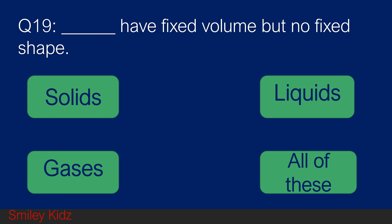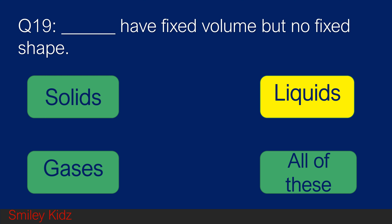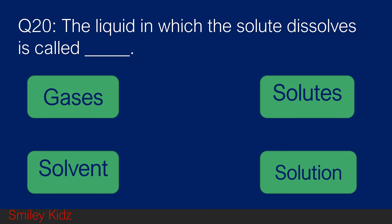Question number 19. Blank have fixed volume but no fixed shape. Option A solids, option B liquids, option C gases, and option D all of these. Your time starts now. And your time is up. The right answer is liquids. Liquids have fixed volume but no fixed shape.